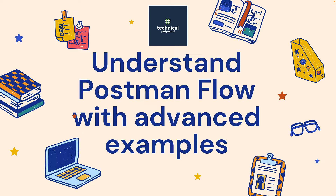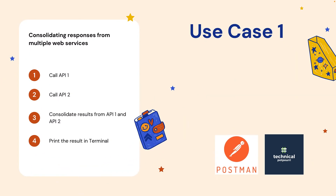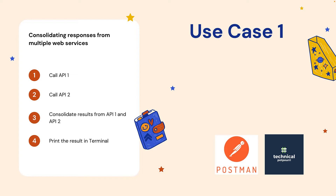Let's get started with Use Case 1. In this use case I am trying to consolidate responses from multiple web services. Step one: call API one. Step two: call API two. Step three: consolidate the responses from API call one and API call two. Step four: print the result in the terminal. You can think of it this way — you have two API calls and you want to consolidate both responses and pass them as input to a third API call.